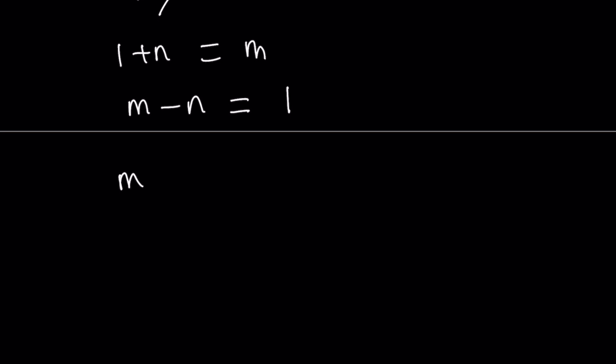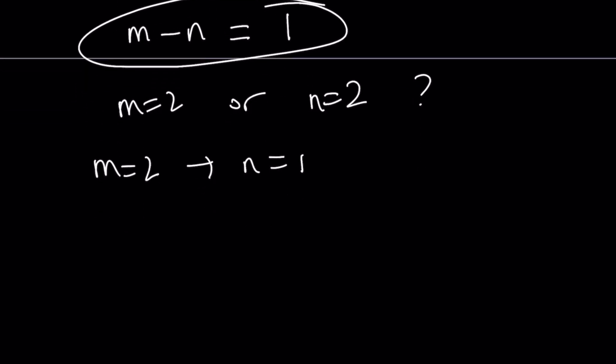So either m equals 2 or n equals 2. Which one? Let's find out. If m is equal to 2, then n must be 1 because their difference is 1. Remember, m minus n is equal to 1. But that's impossible because n equals 1 is not a prime number.